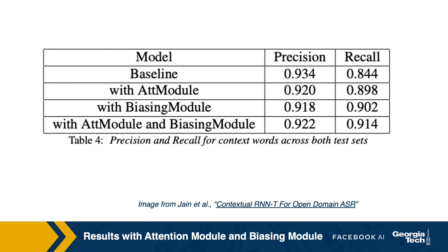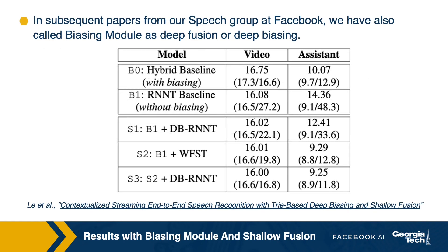As mentioned, the biasing module has lower computational complexity than the attention module. In another paper from our group, 'Contextualized Streaming End-to-End Speech Recognition with Trie-Based Deep Biasing and Shallow Fusion', we have also shown results for combining the biasing module with shallow fusion. Deep biasing refers to the use of the biasing module in that paper. Please find more details about the experiment setup and gains from combining shallow fusion with deep biasing in that paper.